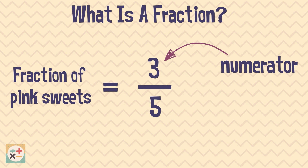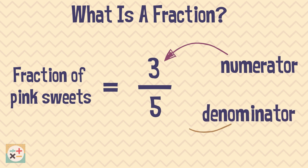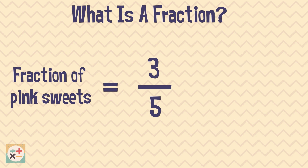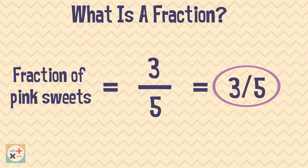In this example, the numerator represents the number of pink sweets. The number on the bottom of the fraction is called the denominator and shows the total number of parts or objects that there are. In this case, there are five sweets in total. Sometimes you may see a fraction written differently — the numerator will always be written before the denominator.